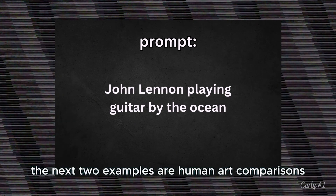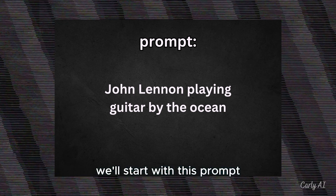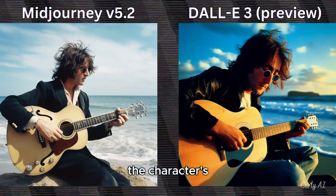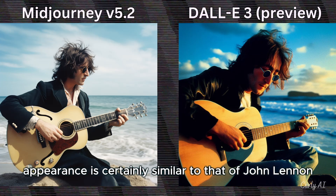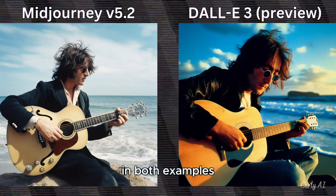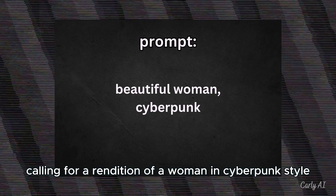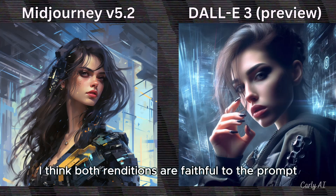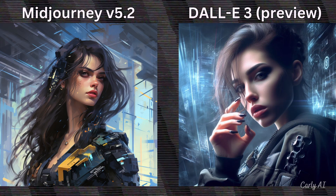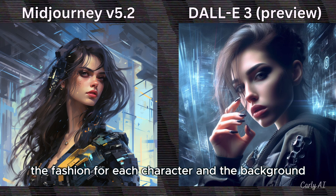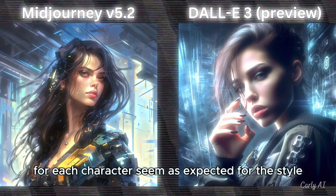The next two examples are human art comparisons. We'll start with this prompt calling for an image of John Lennon at the beach, playing his guitar. The character's appearance is certainly similar to that of John Lennon in both examples. I do like both of these results. Here we have a prompt calling for a rendition of a woman in cyberpunk style. I think both renditions are faithful to the prompt and the cyberpunk style. The fashion for each character and the background for each character seem as expected for the style.